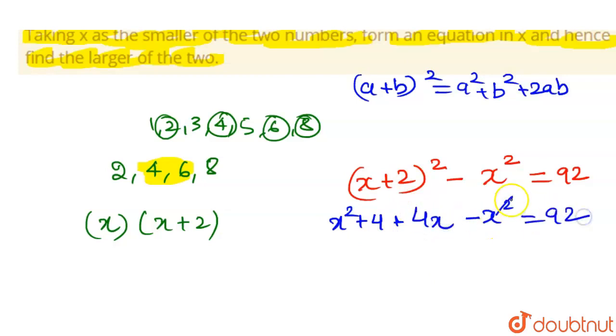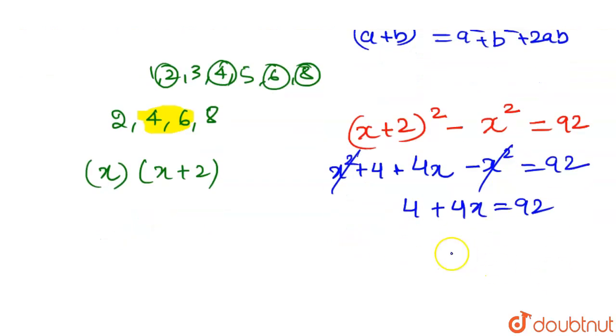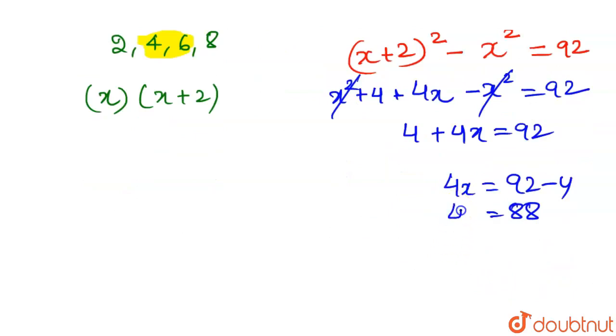x² and x² will be cancelled out. 4 plus 4x equals 92. From here we will get 4x equals 92 minus 4, that is 88, and so x is 22. 88 upon 4 will give you 22.